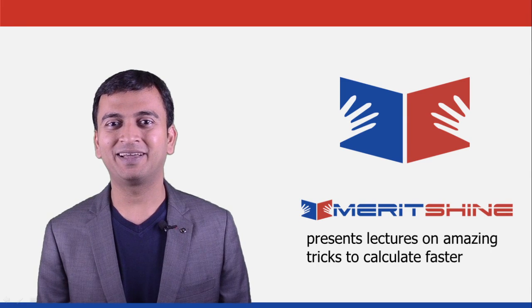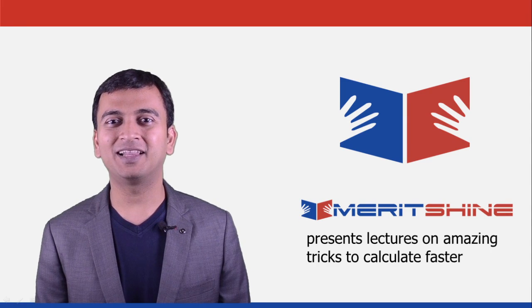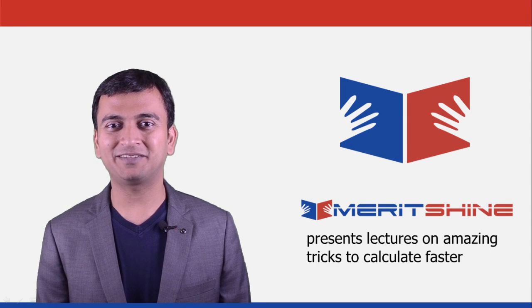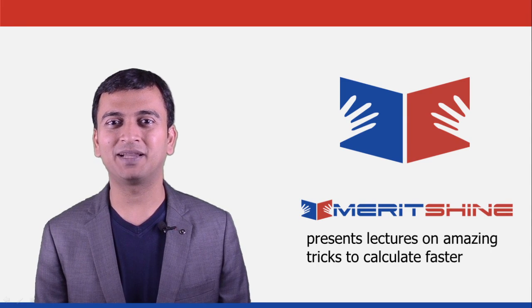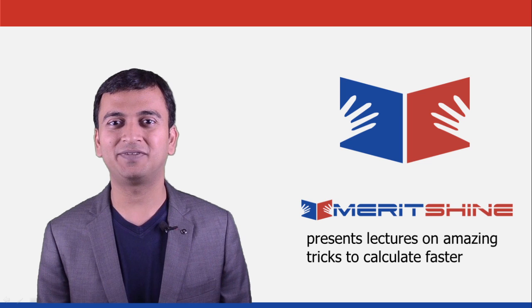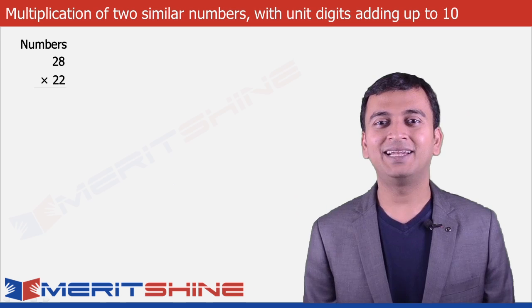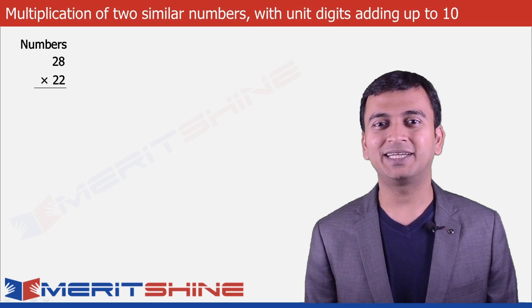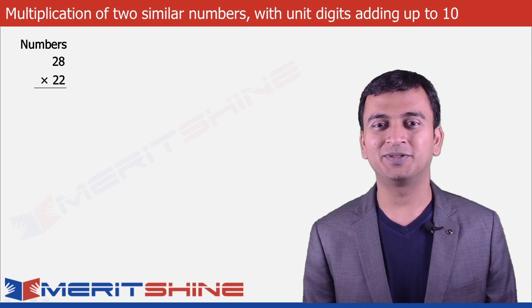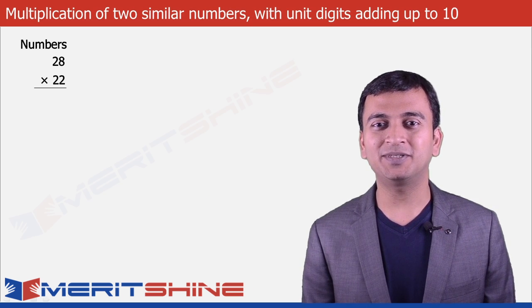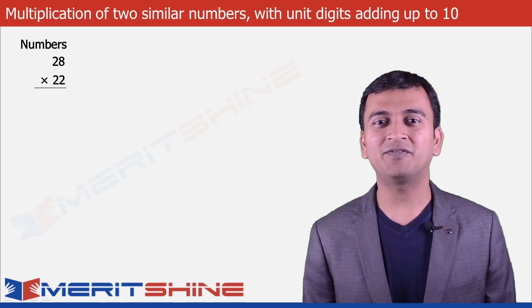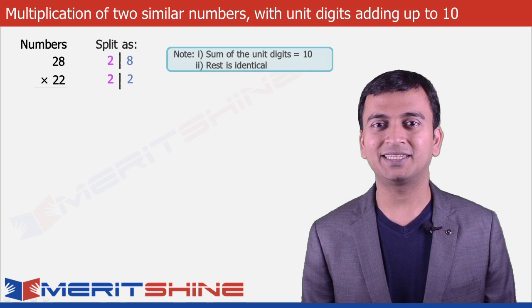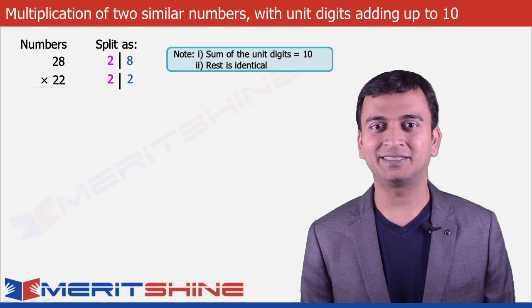Hi, I am Sameer and now we will learn some special tricks to multiply two numbers faster. Let us try to multiply 28 and 22. Please note that the sum of the unit digits is 10 and the rest is identical.